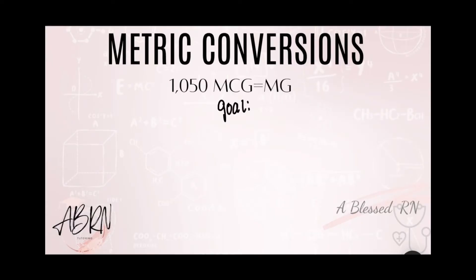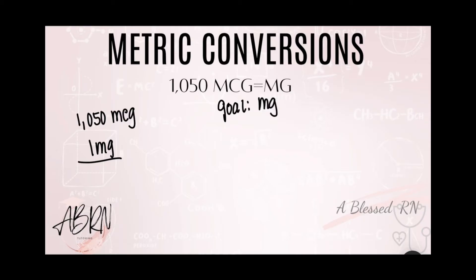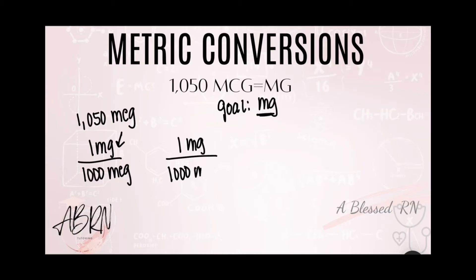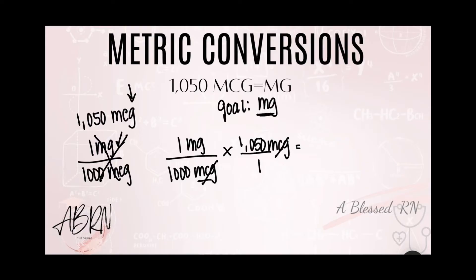1,050 micrograms equals how many milligrams? The goal is milligrams. Our puzzle pieces are the micrograms in the equation that need to be converted, and our conversion is 1 milligram equals 1,000 micrograms. The goal is milligrams, so I start with what I'm looking for — it'll be the first puzzle piece on top. I'll put micrograms at the top so they cancel out with the micrograms at the bottom. Anything by itself goes over one so we can see it's in the numerator. Multiply across the top, multiply across the bottom, and divide to get 1.05 milligrams.